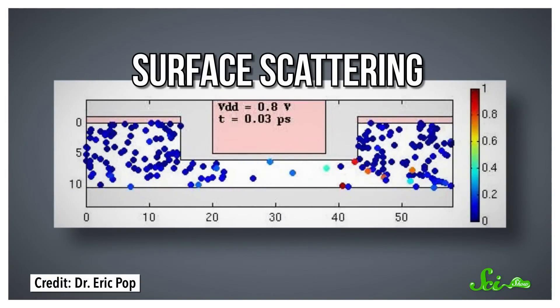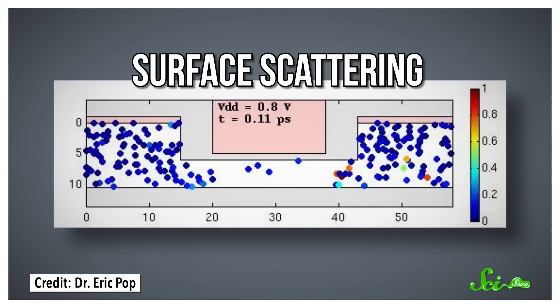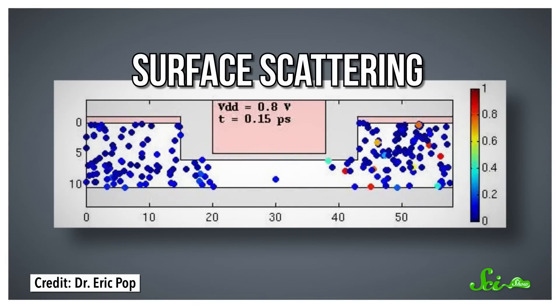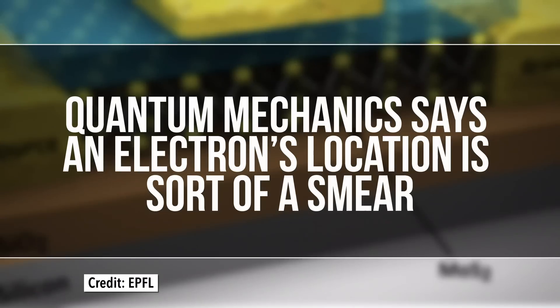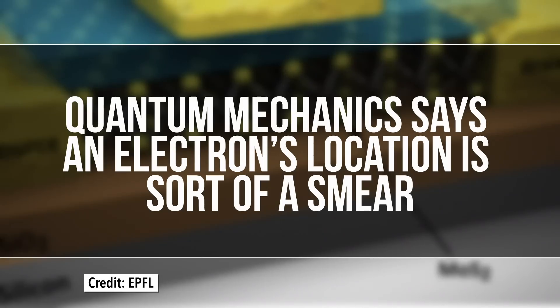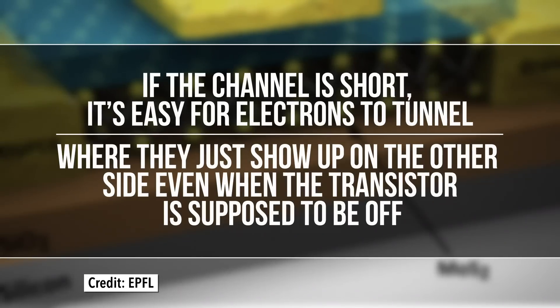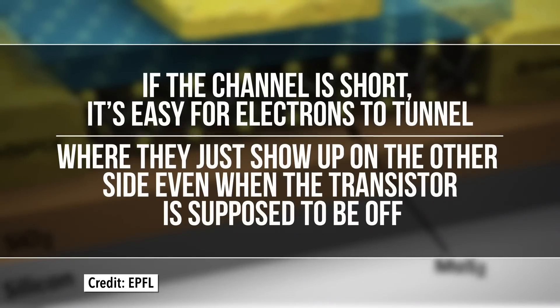Another issue is surface scattering, where the electrons in the channel get distracted by the charge on the gate and bounce off tiny imperfections in the channel's surface. And then, of course, there's quantum mechanics — the branch of physics that deals with the super tiny. In quantum mechanics, things don't always work the way you'd expect based on the everyday scale we're used to. Quantum mechanics says an electron's location is sort of a smear. If the channel is short, it's easy for them to tunnel — where they just show up on the other side even when the transistor is supposed to be off.